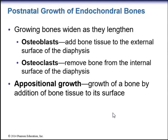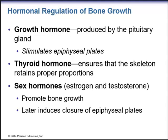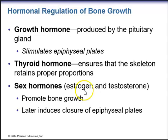Growing bones widen as they lengthen through appositional growth: osteoblasts add bone to the external surface of the diaphysis while osteoclasts remove bone from the internal surface. Bone growth is regulated by hormones: growth hormone (from the anterior pituitary) stimulates epiphyseal plates; thyroid hormone ensures proper skeletal proportions; and sex hormones (estrogen and testosterone) promote bone growth and later induce closure of the epiphyseal plates.